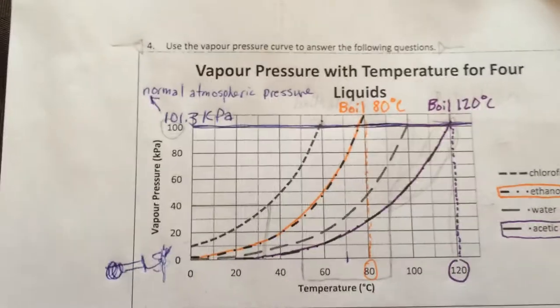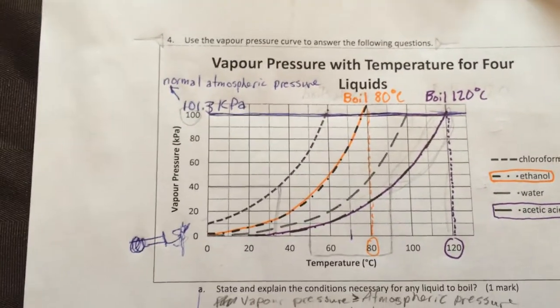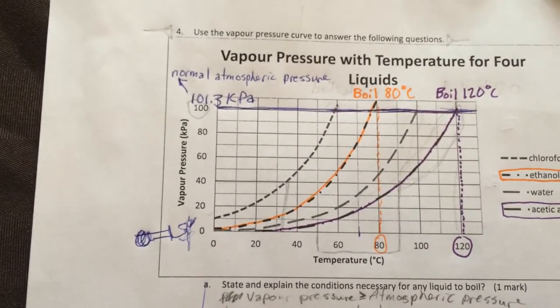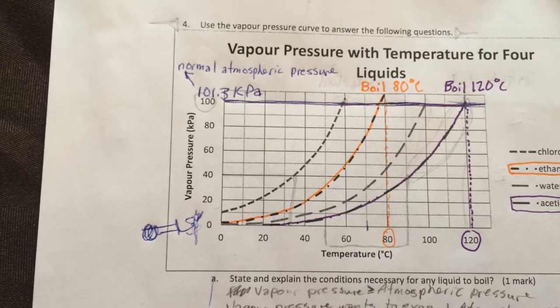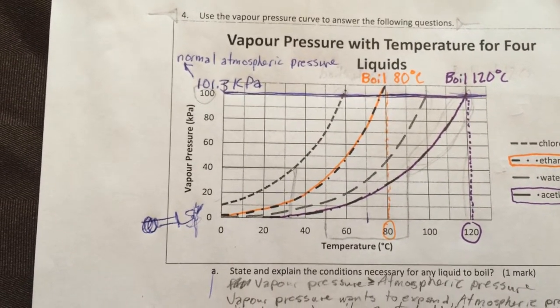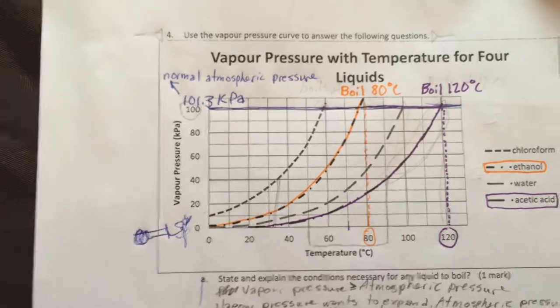Right now when I look back I realize it's wrong, because in my notes it says here that vapor pressure is equal to the pressure holding the particles together, atmospheric pressure for a liquid to boil.